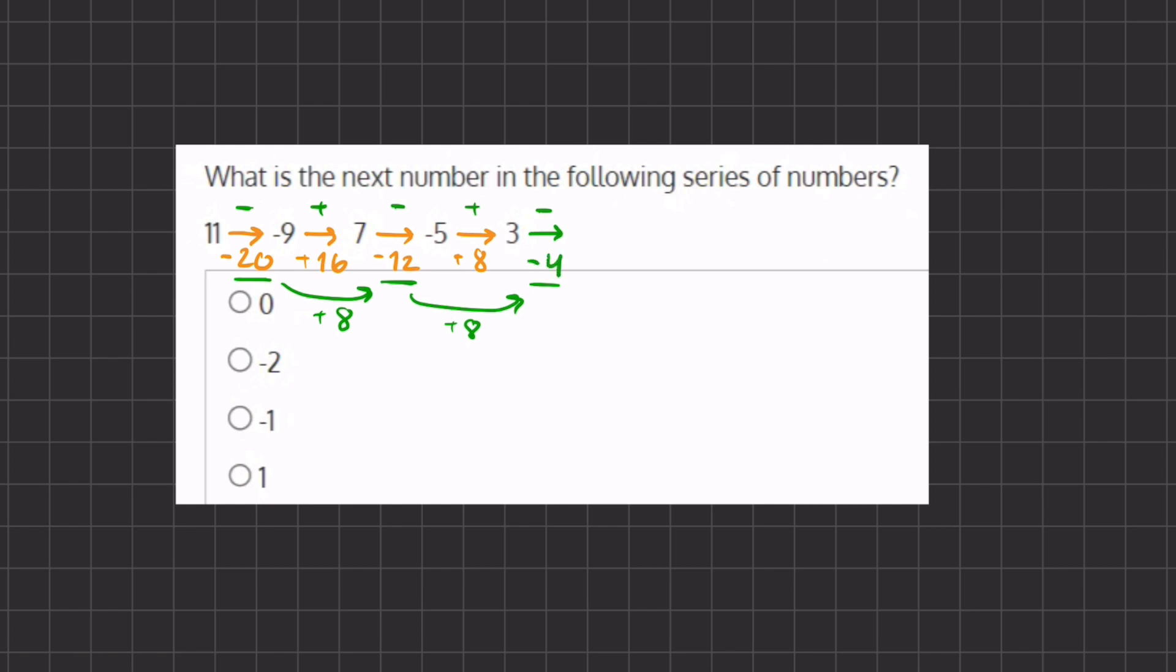So if we have 3 minus 4, we get negative 1, which is going to be the next number in our following series and corresponds with answer C.